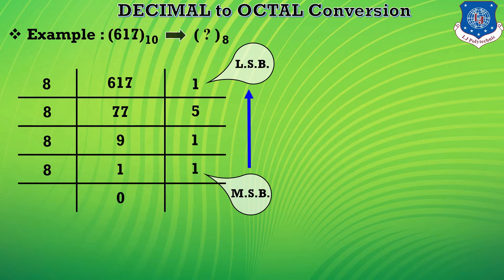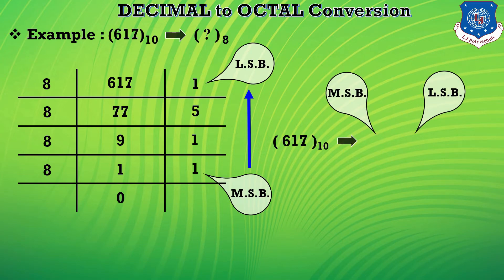The arrow indicates the position of the remainder for the answer. Here 617 in decimal is converted to the octal number 1151. Now I am presenting more examples for your practice.